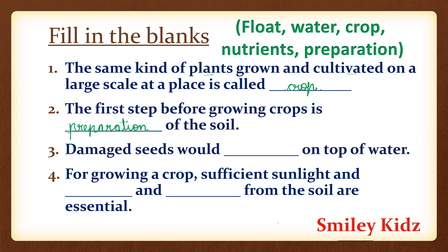Now let's move to the third one. Damaged seeds would float on the top of the water. For the fourth one: for growing a crop, sufficient sunlight and water and nutrients from the soil are essential.